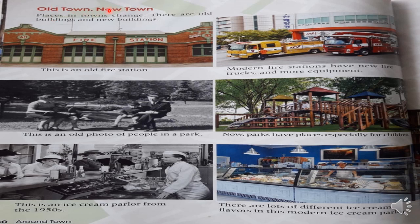Pueblo Antiguo, Pueblo Nuevo. Los lugares en los pueblos cambian. Hay antiguos edificios y nuevos edificios. Esta es una estación de bomberos antigua. Esta estación de bomberos es moderna. Tiene un camión de bomberos y más equipos. Esta foto es antigua de personas en un parque. Ahora los parques tienen lugares especiales para los niños. Esta es una heladería de los años 1950. Hay muchos sabores diferentes de helados en esta moderna heladería. Como pueden observar, que todos los tiempos cambian.